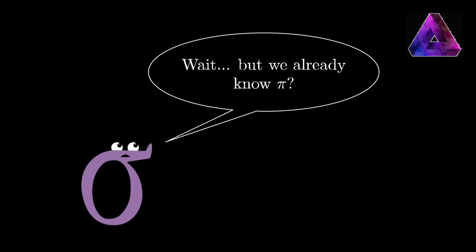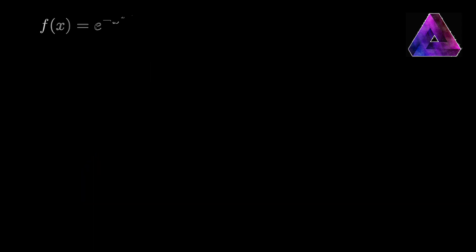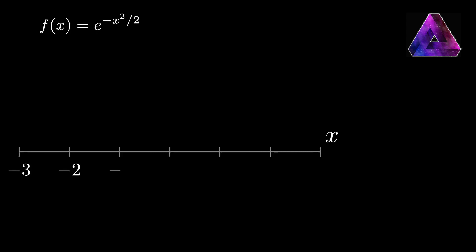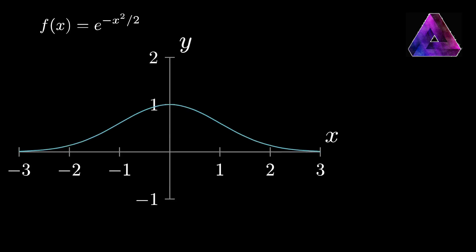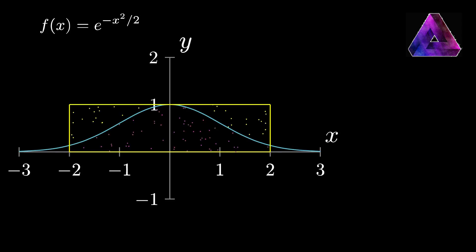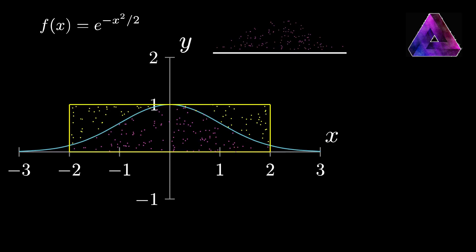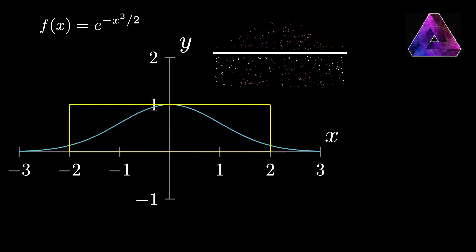And yes, I know — we already know the value of pi. But this can be applied to calculus. So let's consider we have this function, and we want to define the area underneath its curve from negative 2 to 2. I can take this rectangle now, instead of a square, fill it with a bunch of dots, and consider the ratio of the dots inside divided by the total number of dots, multiply by the area, and get this approximate estimate.